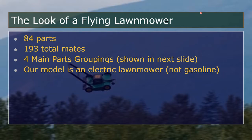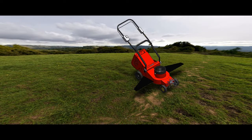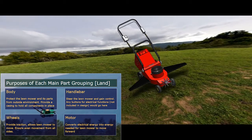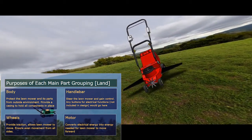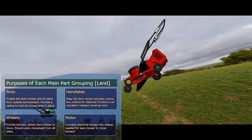Our model is electric, so that means it doesn't require gas. As mentioned before, we split our parts into four main groupings. You have the body, which protects the lawnmower and its parts from the outside environment. It also provides a casing to hold all of the components in place and hold them sturdy while the lawnmower is moving.